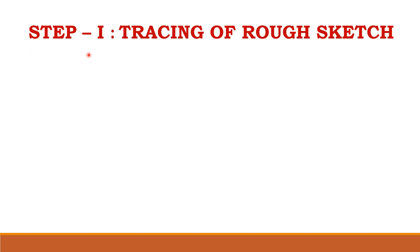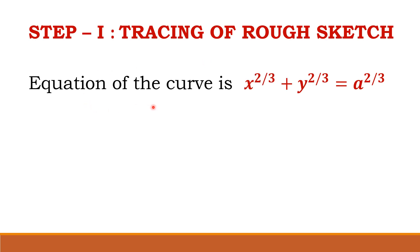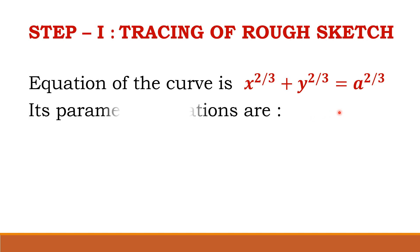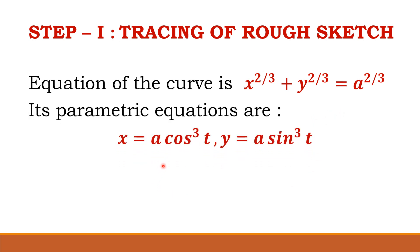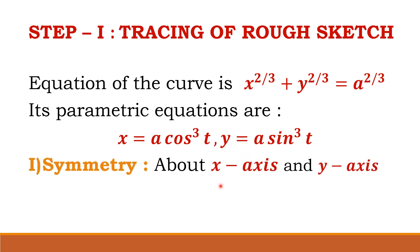In step 1, we are going to trace the rough sketch of the curve x raised to 2/3 plus y raised to 2/3 equals a raised to 2/3, whose parametric equations are x equal to a cos³t and y equal to a sin³t. For symmetry, this curve has symmetry about both the x-axis and the y-axis.